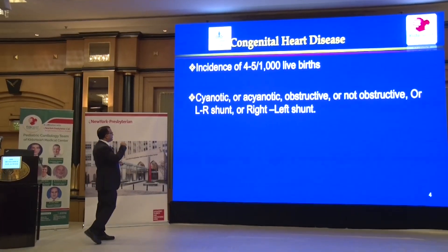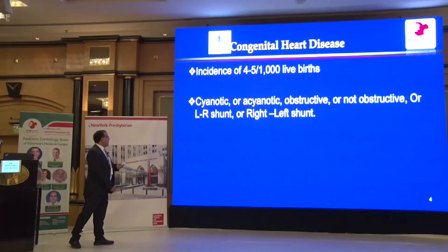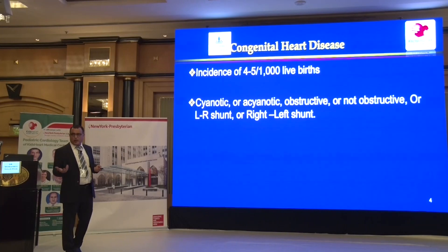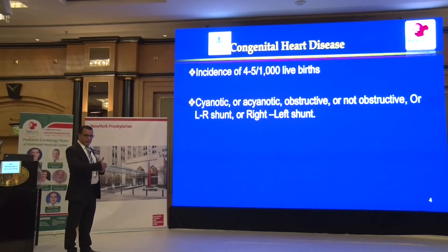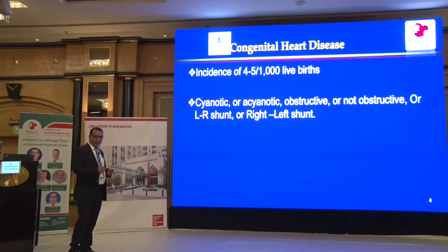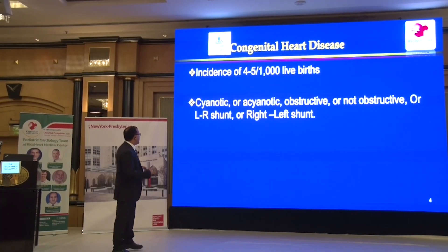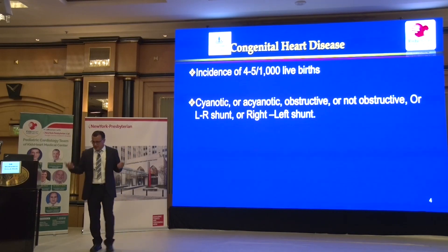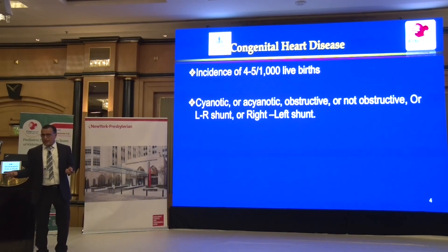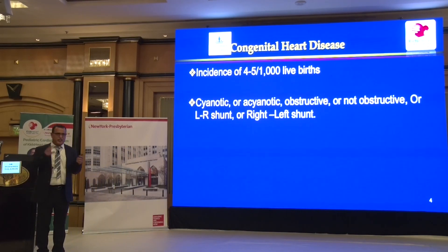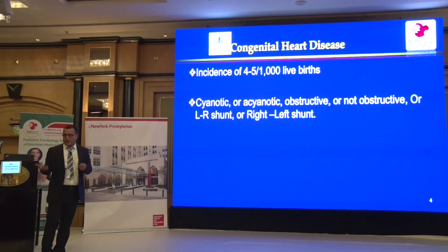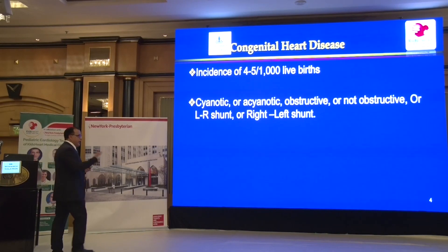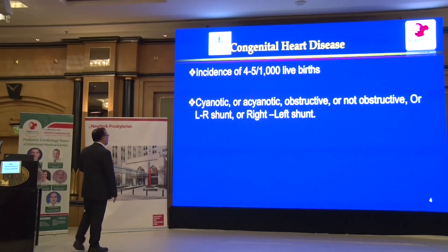Congenital heart disease occurs in about 1% overall, and we believe it's higher when you add bicuspid aortic valve and other conditions. There are many classifications — cyanotic, acyanotic, left-to-right, right-to-left — but that is not the subject of this talk.